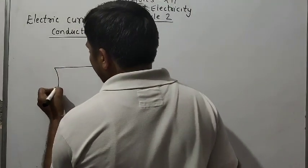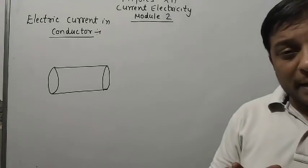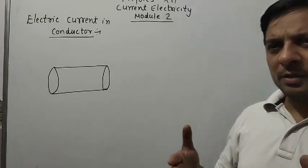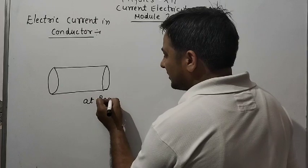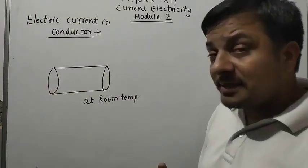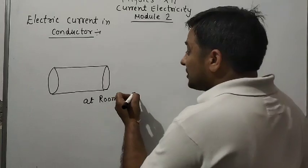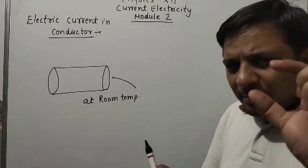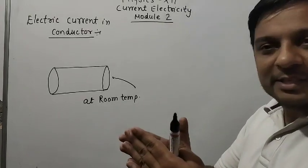In a conductor, the solid conductor atoms are closely packed. There are free electrons that exist on the surface of the conductor — these are the free charge carriers. At room temperature, there is thermal energy, and due to that thermal energy the kinetic energy of electrons increases.